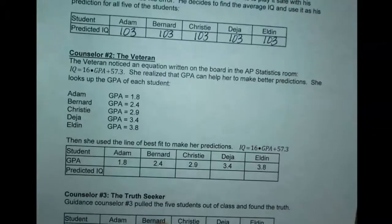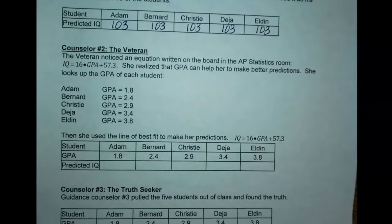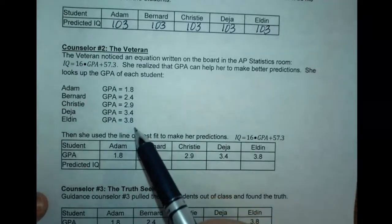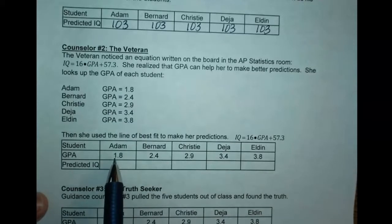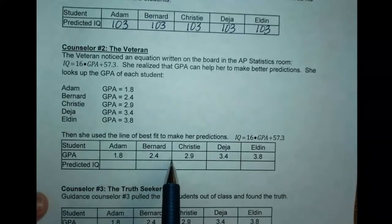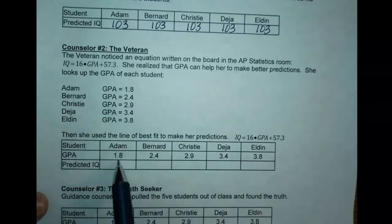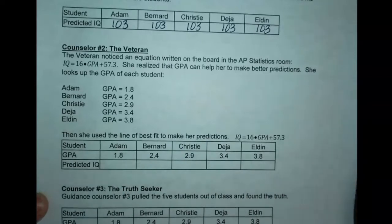Now we have the veteran counselor. The veteran noticed an equation written on the board in the AP stats room. The equation is IQ equals 16 times GPA plus 57.3. She realized that GPA can help her make better predictions. She looks up the GPA of each student. I want you to pause the video, take their GPAs, plug it in for GPA, and find their predicted IQ.